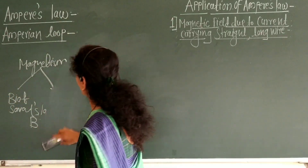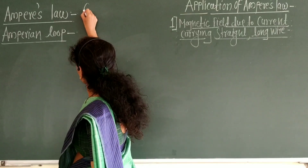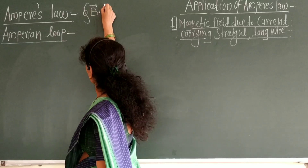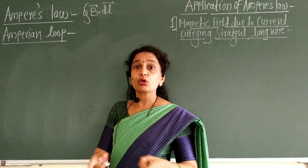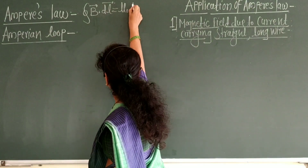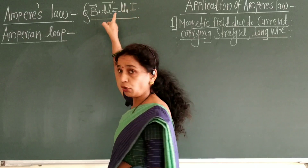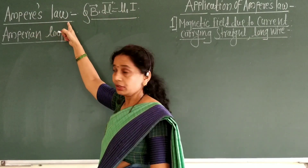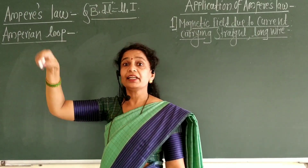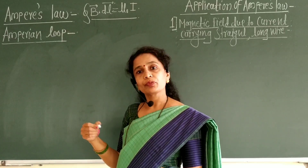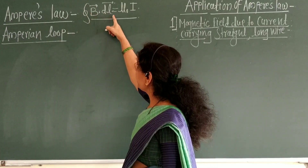What is Ampere's law? What is its statement? The line integral of the magnetic field around a closed loop is equal to mu-zero times the current flowing through that path. The mathematical formula is: the line integral of B·dL is equal to μ₀I.